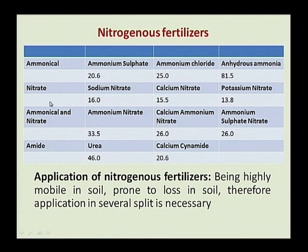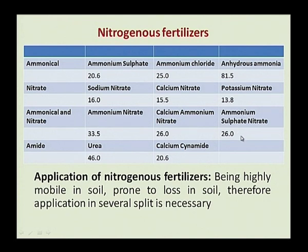Under nitrate nitrogen fertilizers: sodium nitrate has 16 percent nitrogen, calcium nitrate has 15.5 percent nitrogen, and potassium nitrate has 13.8 percent nitrogen. Under ammoniacal-nitrate fertilizers: ammonium nitrate has 33.5 percent nitrogen, and calcium ammonium nitrate (CAN) has 26 percent nitrogen. Amide fertilizers include urea and calcium cyanamide. Urea is the cheapest and most widely used nitrogen fertilizer, containing 46 percent nitrogen. Calcium cyanamide has 20.6 percent nitrogen.